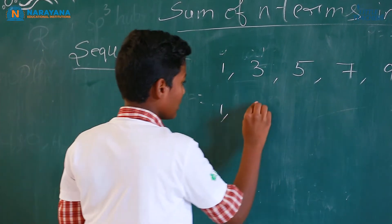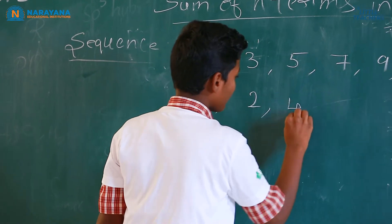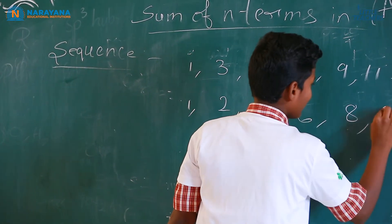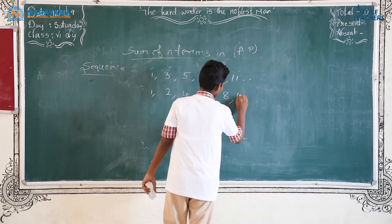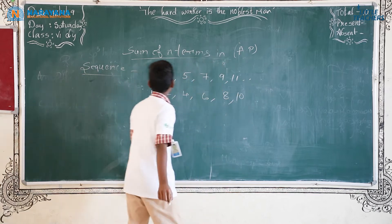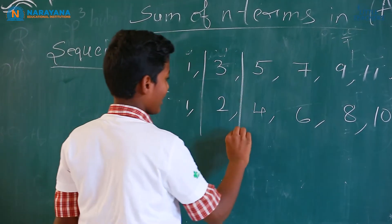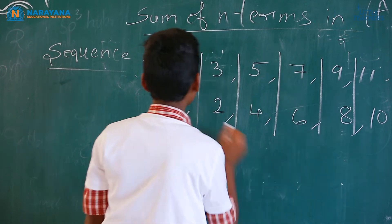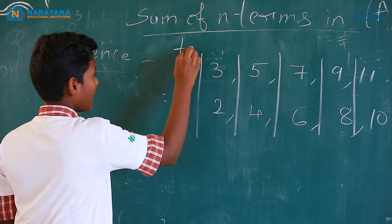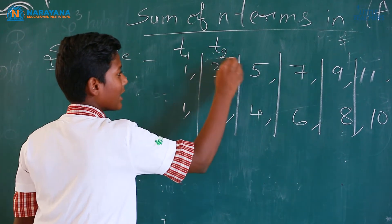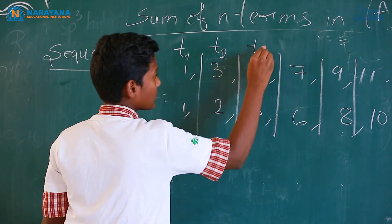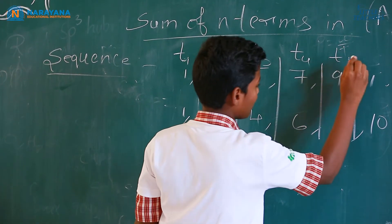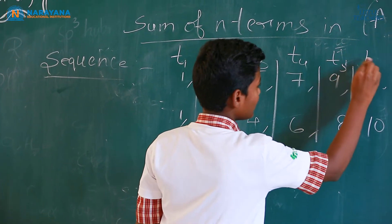For even numbers: 2, 4, 6, 8, 10. Let this be the first term, this is the second term, this is the third term, this is the fourth term, this is the fifth term. Write down: first term, second term, third term, fourth term, fifth term, sixth term.